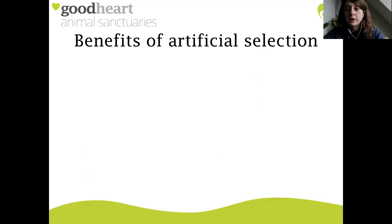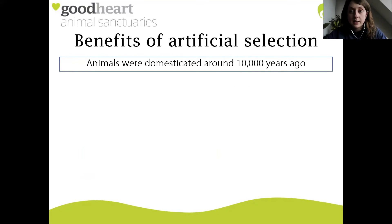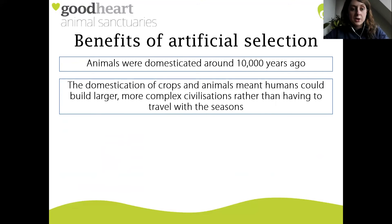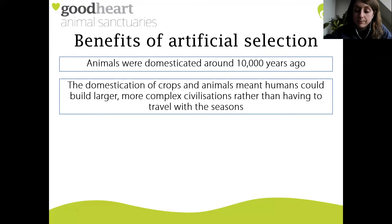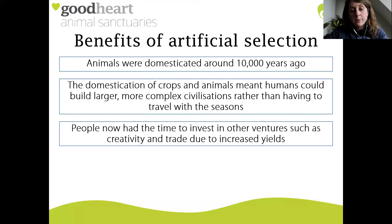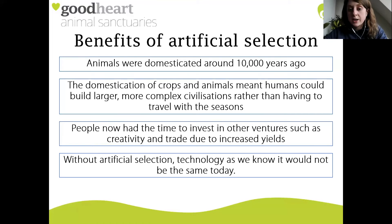So what are the benefits of artificial selection? Why have humans done this? Animals were first domesticated around 10,000 years ago. The domestication of crops and animals meant that humans could build larger and more complex civilizations rather than having to travel with the seasons. Previously humans were hunter-gatherers, having to move around the planet to find vegetables and meat. With the evolution of agriculture they were able to stay in one place and invest their time in other ventures such as creativity and trade - all due to increasing yields by growing their own food. Without artificial selection, technology as we know it would not be the same today.